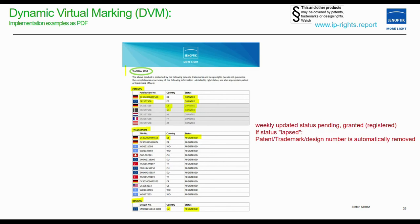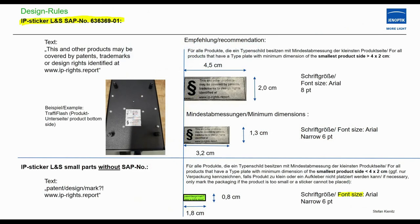The PDF is updated weekly — very lean, very simple. If a patent, trademark, or design number has lapsed, it is automatically removed. The PDF offers a very efficient way to show which patents, trademarks, and designs are granted, which are lapsed, and for trademarks which are registered. You also see the European patent and all validated countries, indicating whether they are granted or not. We also spoke about design rules and the IP sticker with a SAP number, comparable to a screw or another part in your parts list.